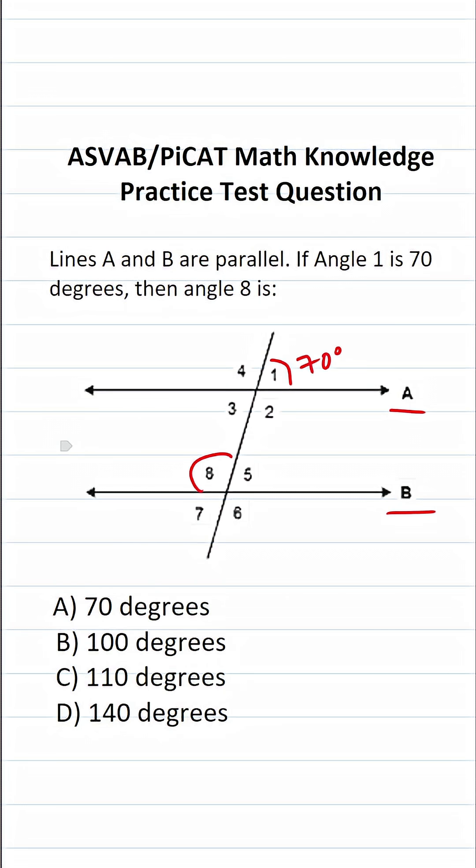To solve this, I'm going to use two different facts. First, angle 1 and angle 2 make a straight line, which means they add up to 180 degrees. So angle 1 plus angle 2 equals 180 degrees.